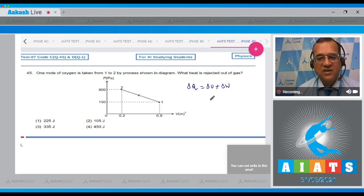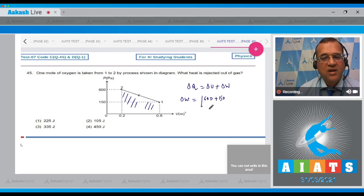This will be calculated from the area and this will be calculated using ΔU = nCᵥΔT. First let's calculate ΔW, that is the area below this curve. So the total area is this pressure value 600 and this value is 150 divided by 2 into the volume, which equals 0.8 minus 0.2. When you solve this, this comes to be 225 joules. Now let's calculate ΔU.